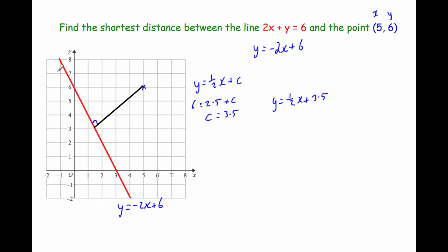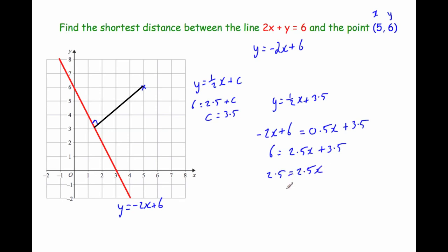Step two is to find where the perpendicular line and the given line intersect. We have y equals one half x plus 3.5 and y equals minus 2x plus 6. Equating them: minus 2x plus 6 equals 0.5x plus 3.5. Bringing the 2x over: 6 equals 2.5x plus 3.5. Subtracting 3.5: 2.5 equals 2.5x, so x equals 1. Substituting back: y equals minus 2 times 1 plus 6, so y equals 4. The intersection point A is (1, 4).